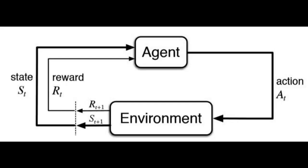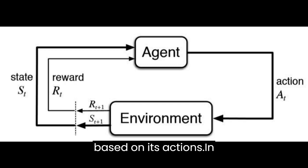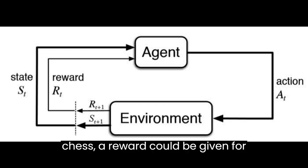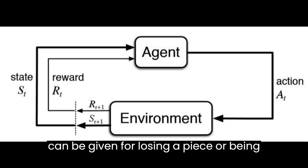The agent receives rewards or penalties based on its actions. In chess, a reward could be given for capturing an opponent's piece or achieving a checkmate, while penalties can be given for losing a piece or being checkmated.